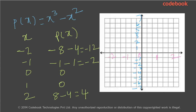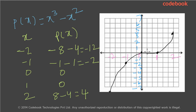Now let's try to plot them on a graph. The x-axis is in pink and the y-axis is in blue. We don't have space for 12 on this graph, so let's assume it's somewhere below. When x is minus 1, p of x is minus 2, so let's put a dot here. When x is 0, it is 0. When x is 1, it is 0. And when x is 2, it is 4. If you connect these points, you will have a graph like this. We have only 2 points at which this curve intersects the x-axis, so this cubic polynomial has 2 roots — 0 and 1.